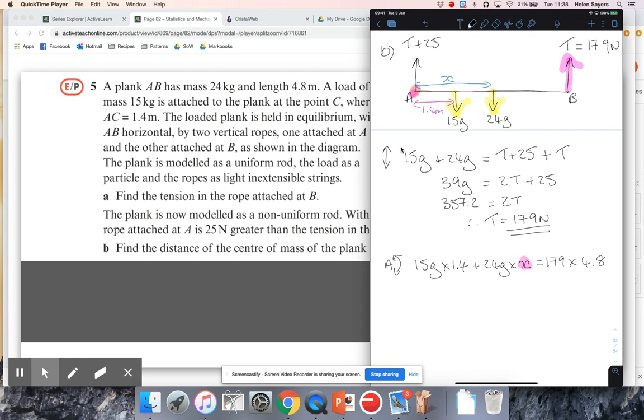So 15 times 1.4. Let's do it as a decimal. So I get that to be 205.8 plus 235.2x is 859.2. So 235.2x is 653.4. So x is hopefully 2.778, so 2.78 metres.